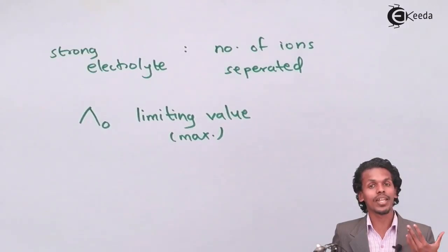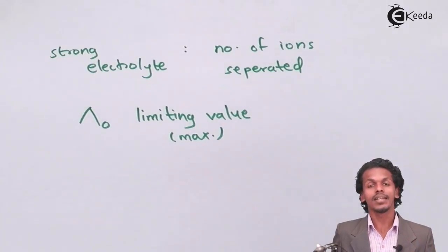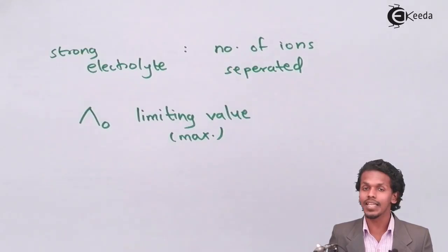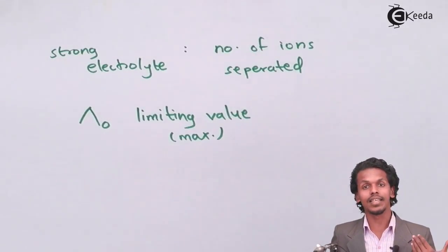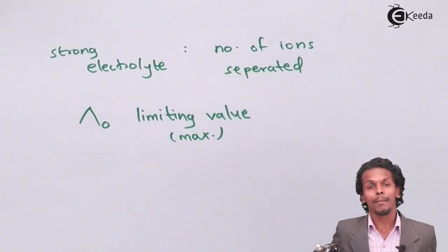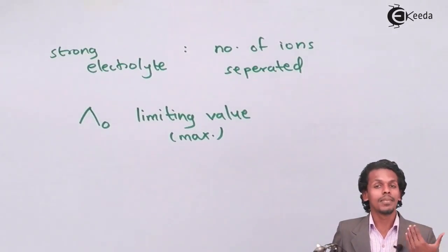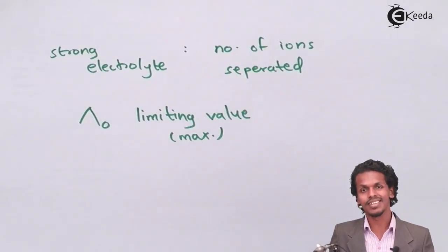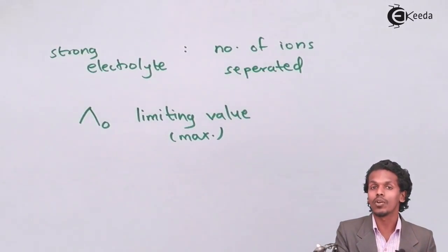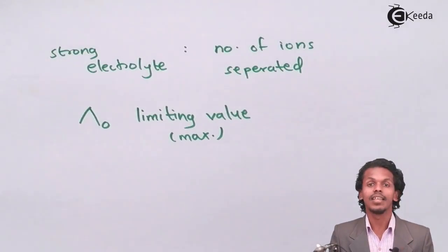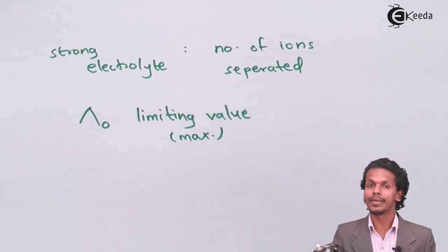When we talk about a weak electrolyte, the molar conductivity also increases with decrease in concentration, or with increase in dilution. But the limiting value, lambda naught, is not reached to the same extent as it is for a strong electrolyte.